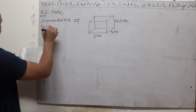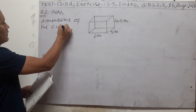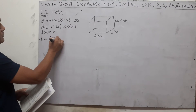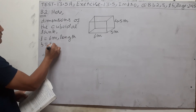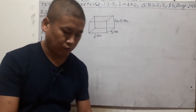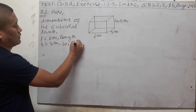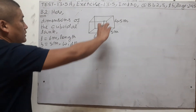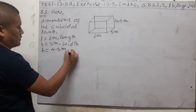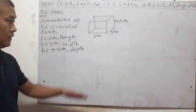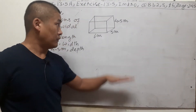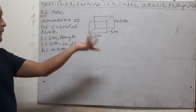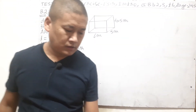Dimensions of the cuboidal water tank: L = 6 m, B = 5 m (they called it 'wide', so we use 'breadth'), and H = 4.5 m (they called it 'deep'). When the tank is below eye level it's called depth, because the tank contains water and we ask how deep the water is. If it were above eye level it would be called height.